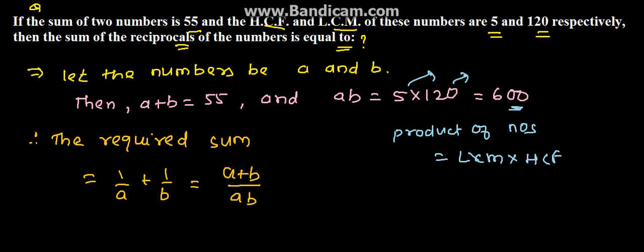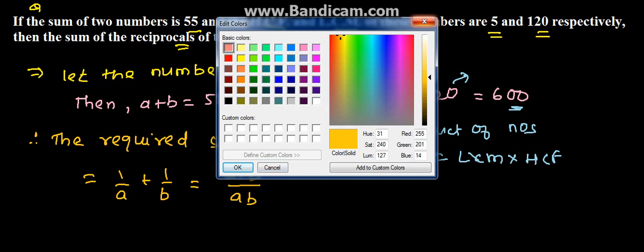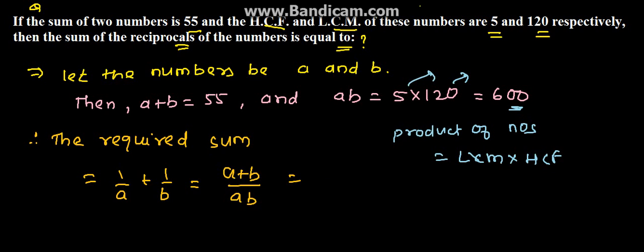We know the sum is 55 and the product is 600, so this equals 55 upon 600, which simplifies to 11 upon 120. Therefore, the sum of the reciprocals of the numbers is 11 upon 120, which is the solution for the given problem. Thank you.